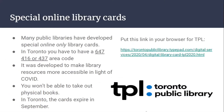Special online library cards. Many public libraries have developed special online-only library cards. In Toronto, you have to have a 647, 416, or 437 area code. It was developed to make library resources more accessible in light of COVID. You won't be able to take out physical books, and in Toronto the cards expire in September.